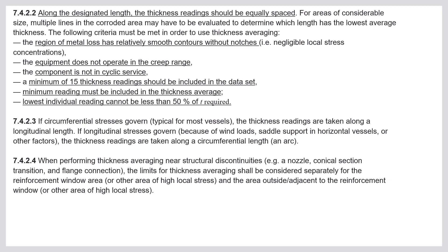To determine which length has the lowest average thickness, the following criteria must be met to use thickness averaging: the region of metal loss has a relatively smooth contour without notches; the equipment does not operate in the creep range; the component is not in cyclic service; and a minimum of 15 thickness readings should be included in the data set.